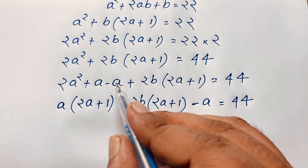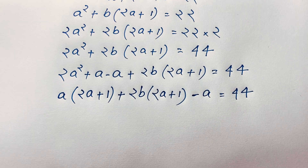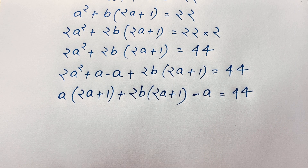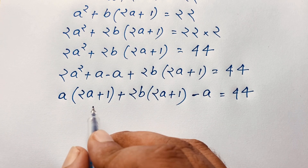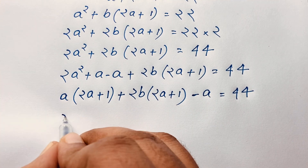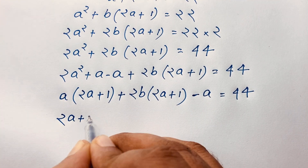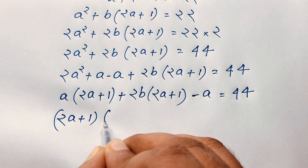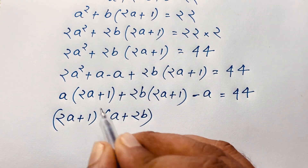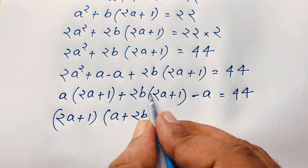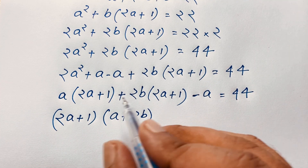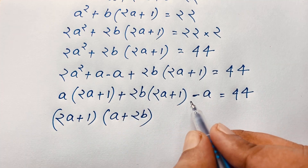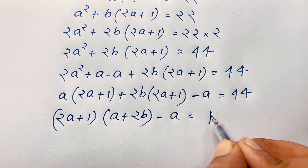We have a negative a term here. Now I multiply both sides by 2 again. Taking (2a plus 1) as a common factor, dividing through gives a plus 2b. So the expression becomes (2a plus 1) times (a plus 2b) minus a equal to 44.